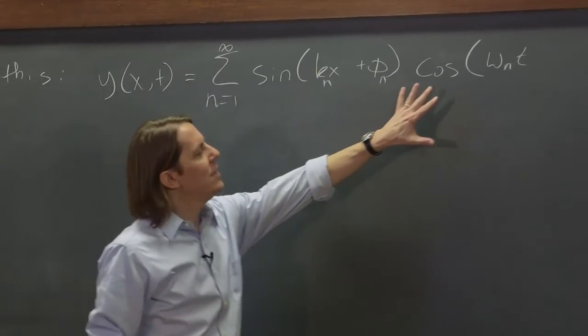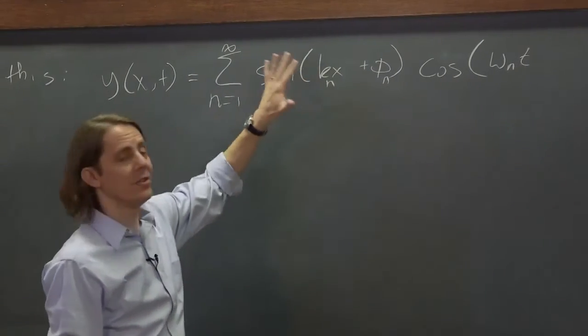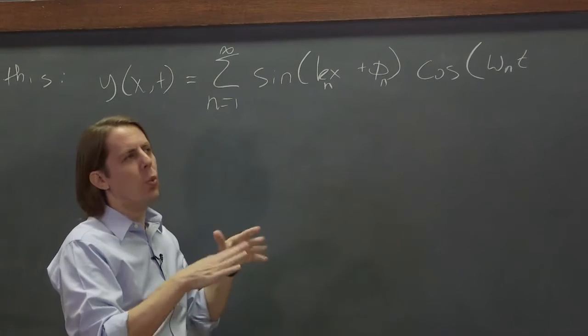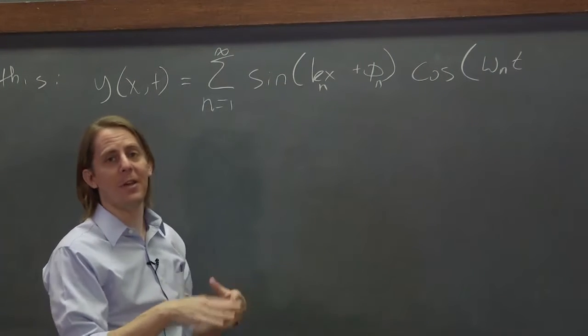So the question is, how do we add in the velocity part? This is basically kind of just saying, let's let all the normal modes oscillate, but one way to make them oscillate might be to let them oscillate out of phase.